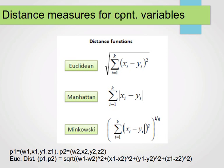If we have continuous or numerical variables, we can use distance functions like Euclidean, Manhattan, or Minkowski. In my explanation I'll be using Euclidean distance. As a reminder of how it's calculated: if we have a point with four components — w1, x1, y1, z1 — and a second point w2, x2, y2, z2, then the Euclidean distance between point 1 and point 2 is the square root of the sum of squared differences: (w1−w2)², plus (x1−x2)², plus (y1−y2)², plus (z1−z2)², and then we take the square root of the overall sum.